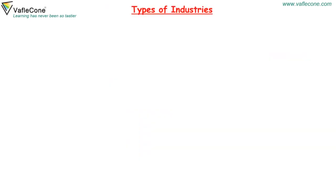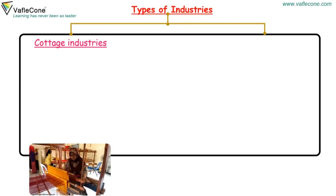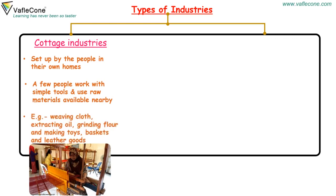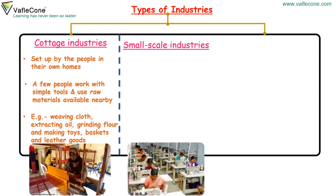Types of Industries — Cottage Industry: Cottage industries are set up by people in their own homes. A few people work with simple tools and use raw materials available nearby. For example, weaving cloth, extracting oil, grinding flour, and making toys, baskets, and leather goods.